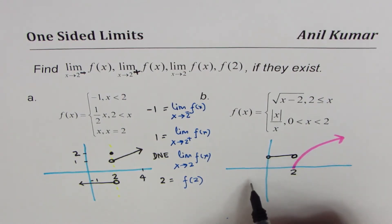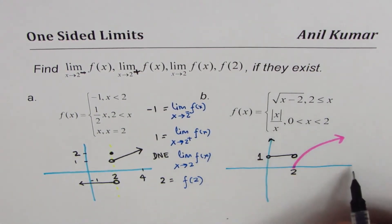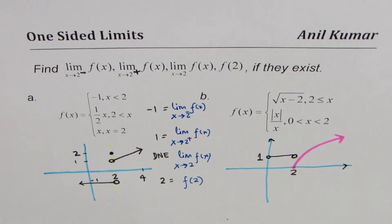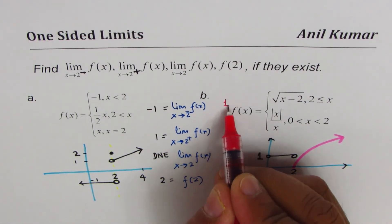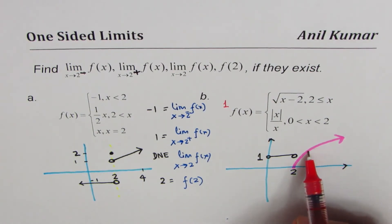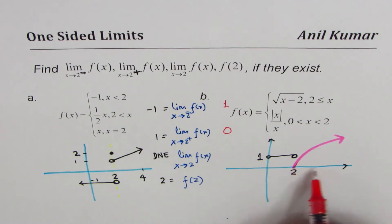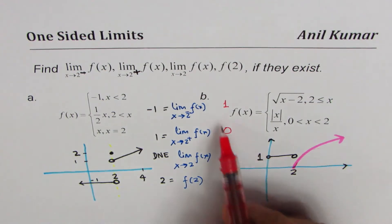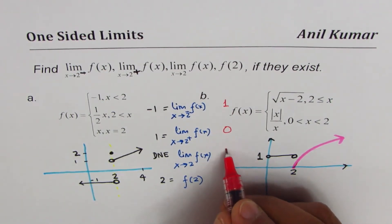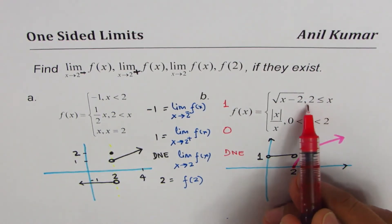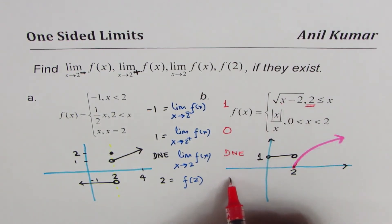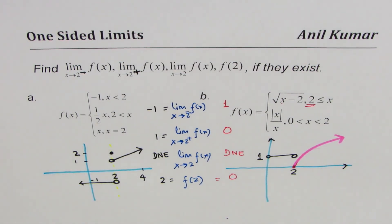At x = 2 the value from the |x|/x piece is also 1. Now reading from the graph: when approaching from the left side of 2, you are in the y = 1 region, so the left-hand limit equals 1. When approaching from the right side, you travel along the square root curve toward 0, so the right-hand limit equals 0. Since these two are different, the two-sided limit does not exist. The value f(2) is found by substituting into the square root piece: f(2) = sqrt(2 - 2) = 0.